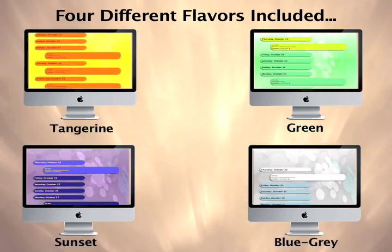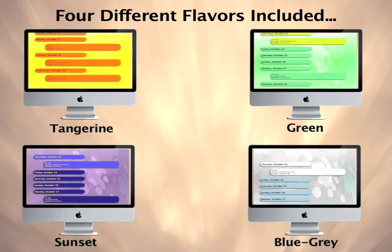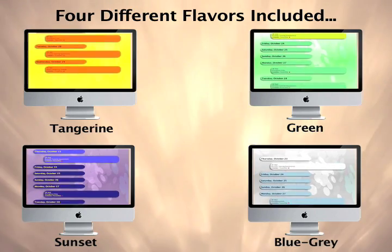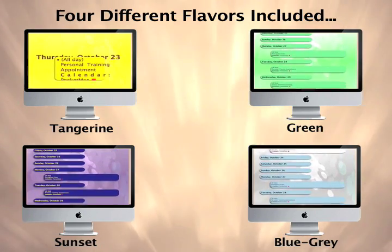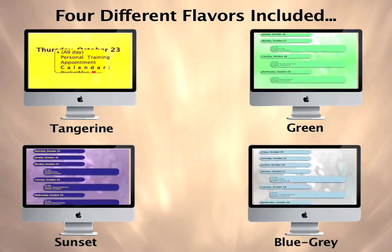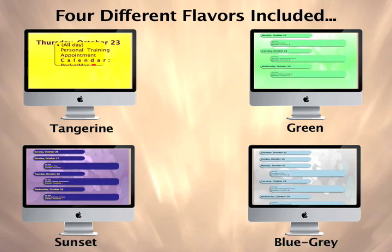The four different flavors of PocketMac iCal Screensaver are previewed here: Tangerine, Green, Sunset, and Blue-Grey. Each is a delightful choice for how you want your data to appear.